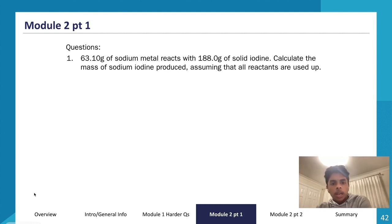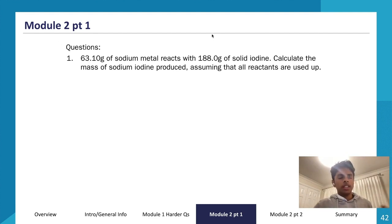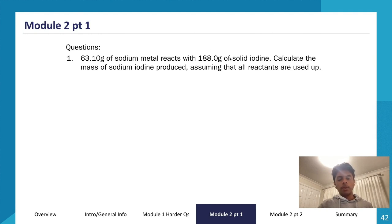Question: 63.10 grams of sodium metal reacts with 188 grams of solid iodine. Calculate the mass of sodium iodide produced, assuming all the reactants are used up. The concept we're using here is the law of conservation of mass — matter can neither be created nor destroyed, so the mass of reactants equals the mass of products. If all reactants are used up, all the mass of the reactants is transferred into the products, so the mass of sodium iodide equals 63.10 plus 188.0.